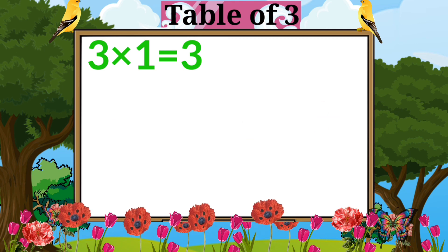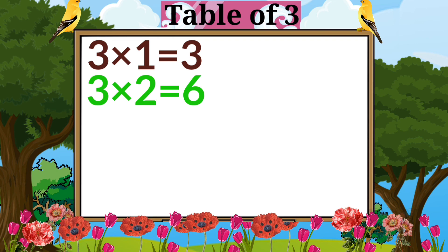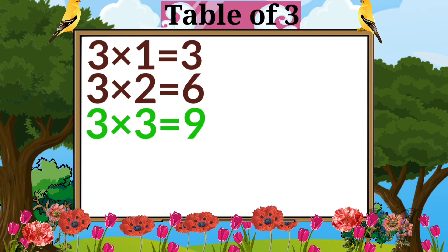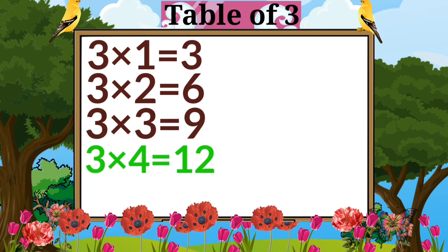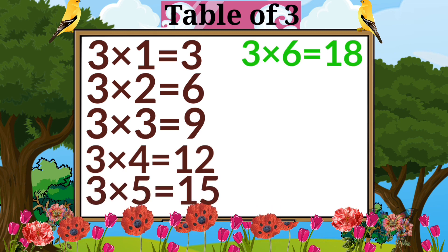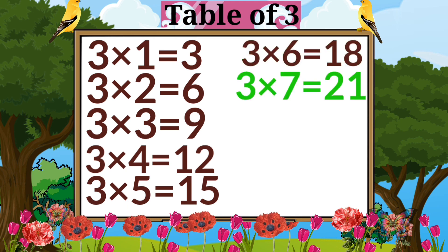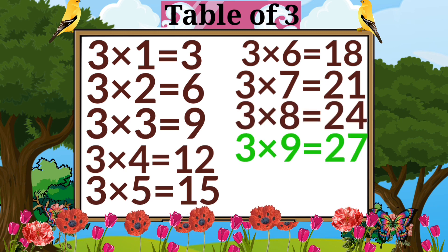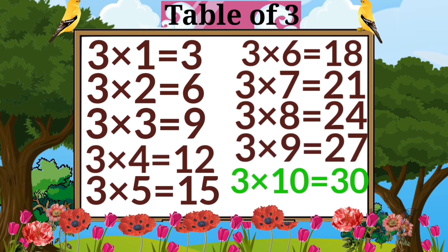Three ones are three. Three twos are six. Three threes are nine. Three fours are twelve. Three fives are fifteen. Three sixes are eighteen. Three sevens are twenty-one. Three eights are twenty-four. Three nines are twenty-seven. Three tens are thirty.